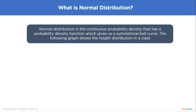Normal distribution is a continuous probability density that has a probability density function which gives us a symmetrical bell curve. Data can be distributed in different ways, but in many cases the data tends to be around a central value with no bias left or right, getting close to a normal distribution — half the data falls on the left of the mean and the other half on the right.